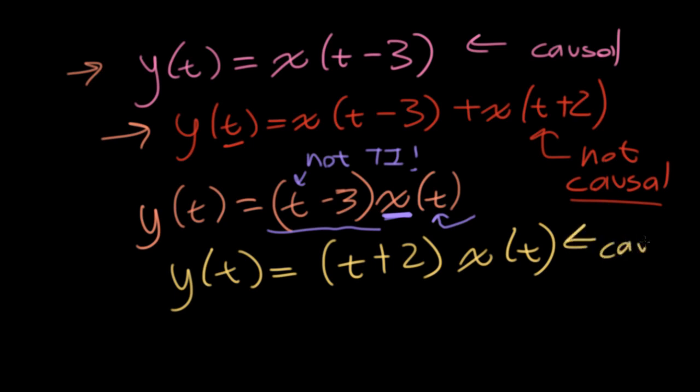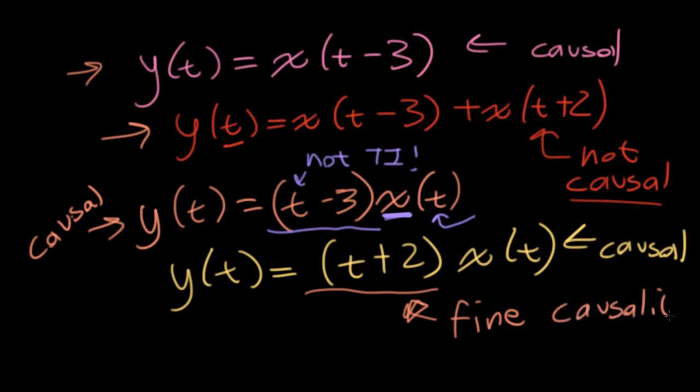Students will sometimes think that if I have a (t+2) out here, this will mess up my causality. No, this is fine. This is perfectly causal, just as the system up here is perfectly causal. The t's that are sitting outside the argument of the x - as far as causality goes, these are fine. This will mess up your time invariance, but it is fine from the standpoint of causality.